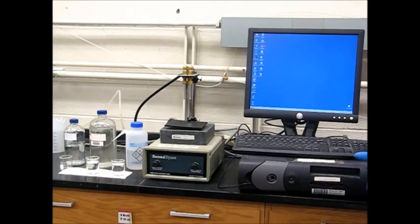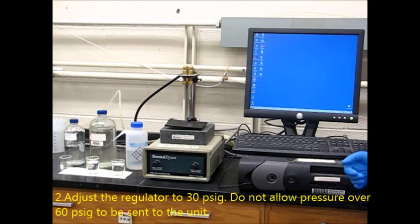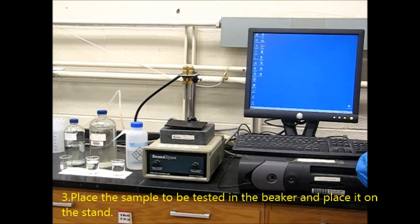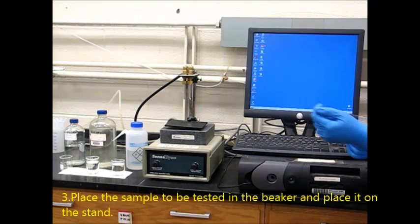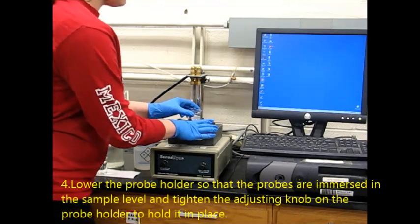The first thing we're going to do is close the regulator connected to the nitrogen source and open the valve to allow nitrogen to flow. Then we'll adjust the regulator to 30 PSIG, not exceeding 60 PSIG. Then we're going to place the sample in the beaker and place it on the stand.